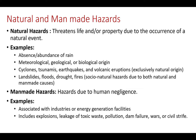Cyclone, tsunami, earthquake, and volcanic eruption are of natural origin. While landslide, flood, drought, and fires are socio-natural hazards due to both natural and man-made causes. For example, a landslide can happen because of monocropping — that is human negligence — as well as because of a natural phenomenon like heavy rainfall.